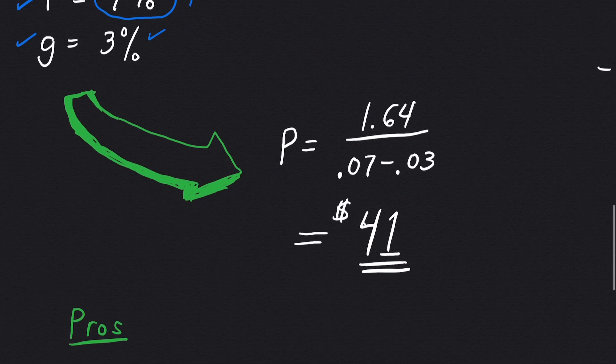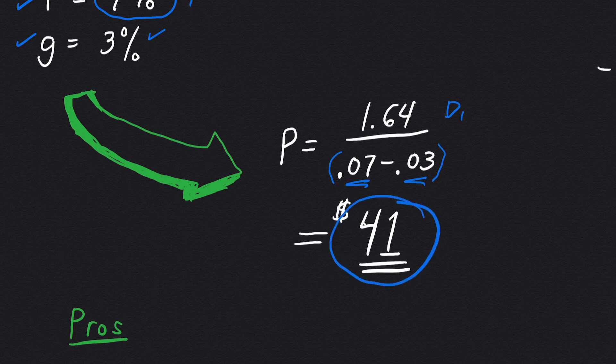So if we plug all of these into the Gordon constant growth model formula, we come up with $1.64, which is D1. 7% is the growth rate, so 0.07. That's how you punch that into your calculator. And then the constant growth rate of 3% for the dividend, 1.64 divided by this, 0.04 when you subtract this out, 1.64 divided by 0.04 equals $41.